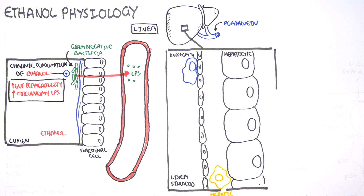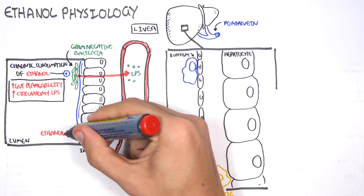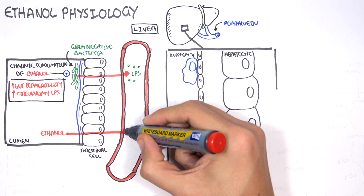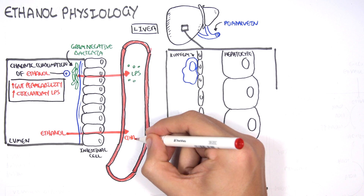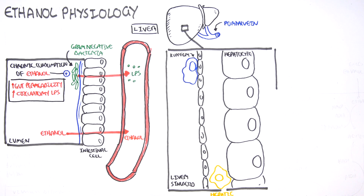That's essentially the overall picture of the lipopolysaccharide story for now, and we'll get back to it. But first, let's go back to the gastrointestinal tract. Ethanol, of course, is absorbed in the gastrointestinal tract, mainly in the stomach and the small intestine.